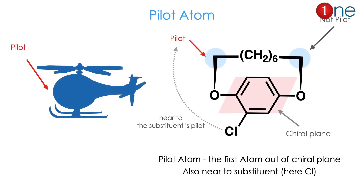Before going into more detail, we need to understand the concept of the pilot atom. Just like a helicopter has a pilot — the front-line operator of the machine — our chiral plane system has a pilot atom. The pilot atom is the first atom out of the chiral plane, i.e., the first carbon above the plane. If you have two possible pilot atoms, you choose the one nearest to the substituent, which here is the chlorine. So the very first thing to identify is the pilot atom.